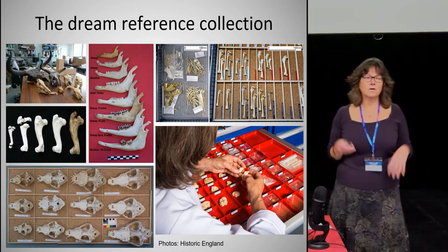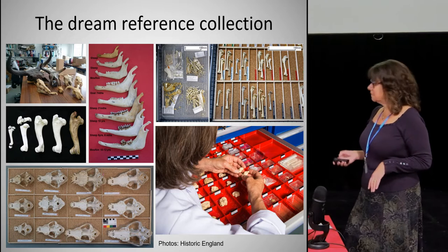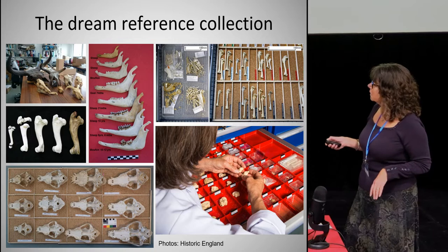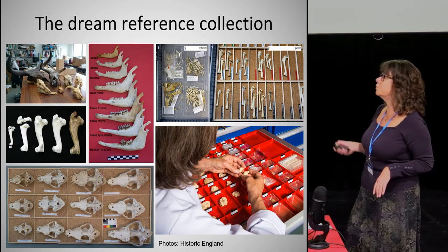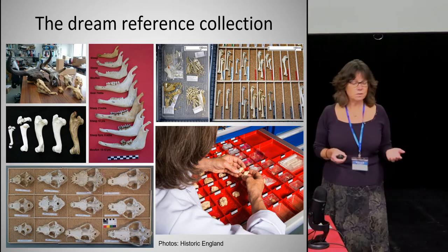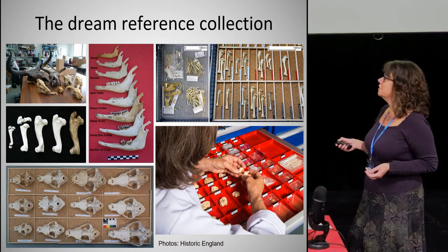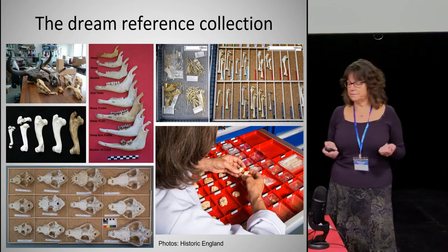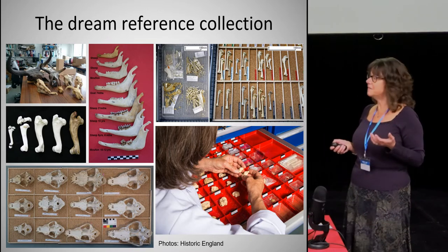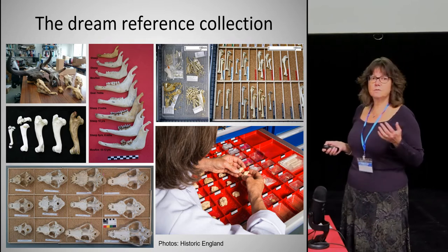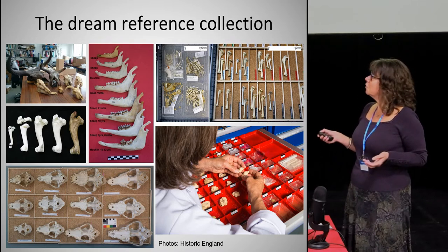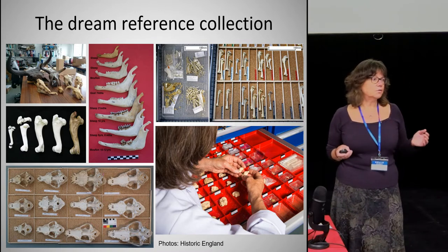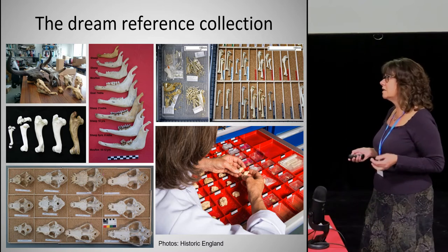The dream reference collection would include everything from an aurochs to a modern domestic cow. With domestic species like dogs, you want as many different breeds as possible because of the different morphologies they have. For sexually dimorphic species — for example, a lot of birds — you want examples of both male and female specimens. With something like sheep, you also want castrates. You also want to have a range of ages. Essentially, the dream collection is huge.